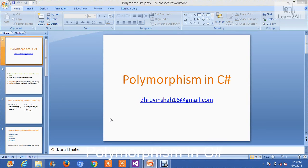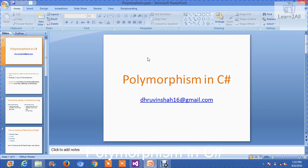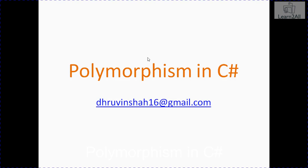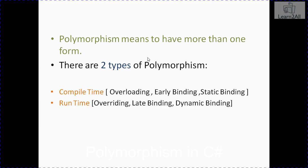Hello friends. In this particular session, we will learn polymorphism in C-sharp. First of all, I will explain what is polymorphism. Polymorphism means to have more than one form. There are two types of polymorphism: one is compile time polymorphism and the second one is run time polymorphism.